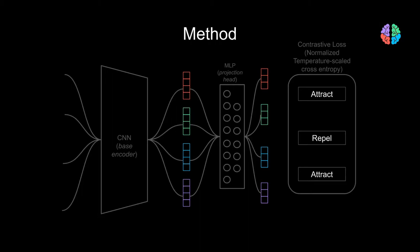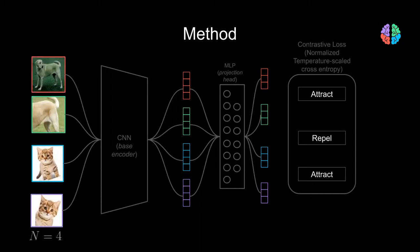Let's take the problem of classifying cats and dogs. To understand the SimCLR architecture, let's take a batch composed of two images of a dog and a cat and their augmentations. We first pass the images through a base encoder f(x) and get their embeddings h. These embeddings are then passed through a two-layer neural network g(x) to get the embeddings z.